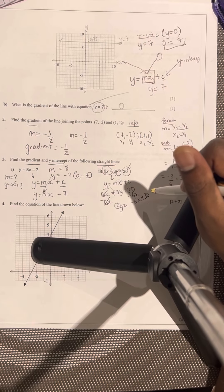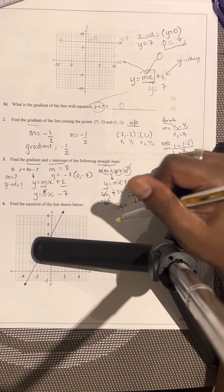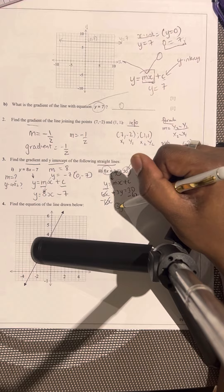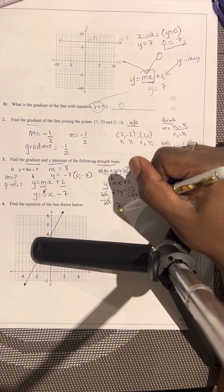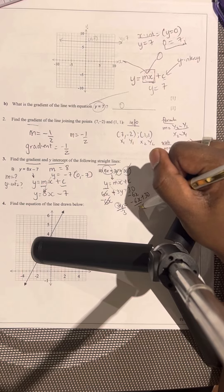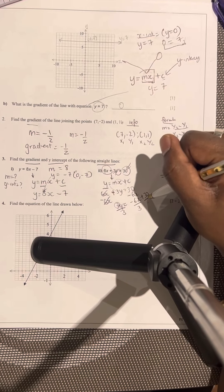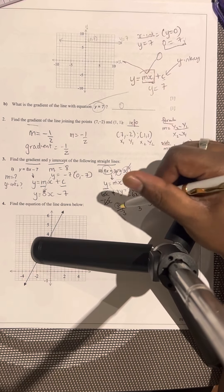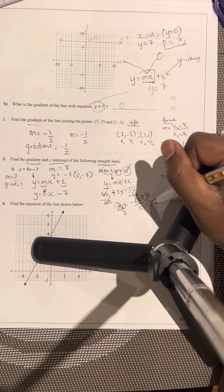How do you get rid of the 3? You've got to ask yourself, what operation is 3 doing to the y? 3 is being multiplied by y. So how are you going to get rid of it? You're going to divide it. The way you get rid of things is by doing the opposite. So doing divide by 3, divide by 3.